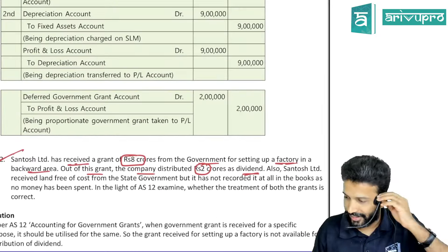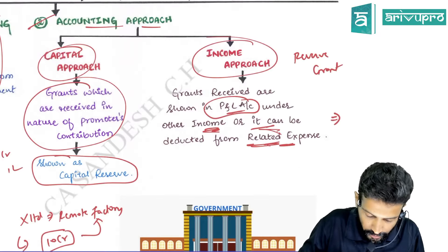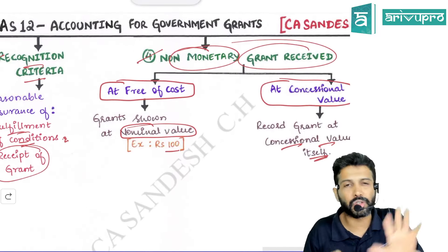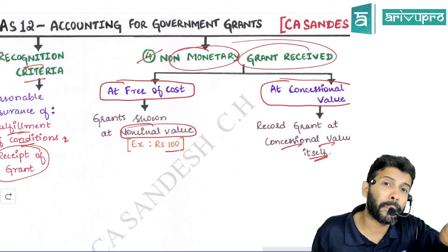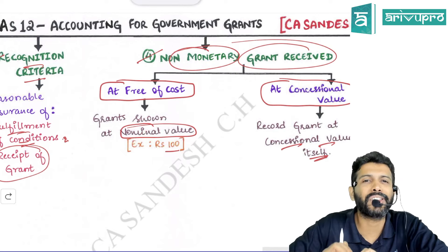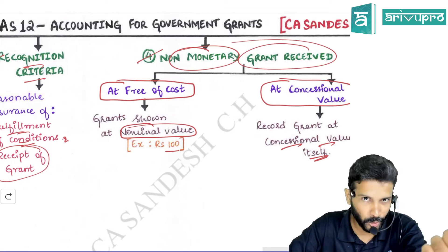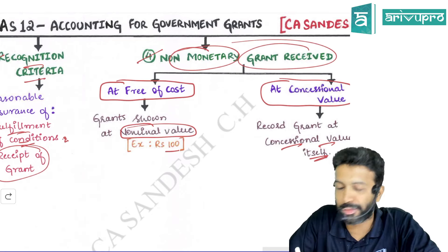If you recorded land at nominal value, no depreciation will arise on it. On land, depreciation doesn't arise anyway. But if it's a building, even though you recorded it at nominal value, don't depreciate it — because you are showing this only for record/control purposes. Depreciation is not required on assets recorded at nominal value as non-monetary grants.